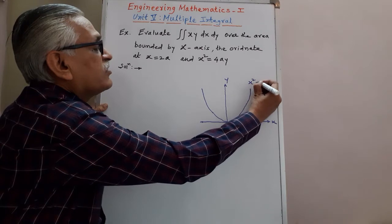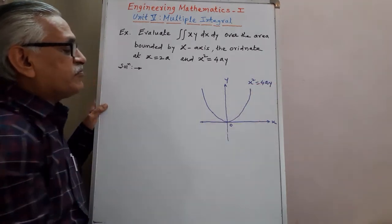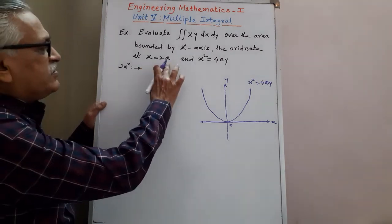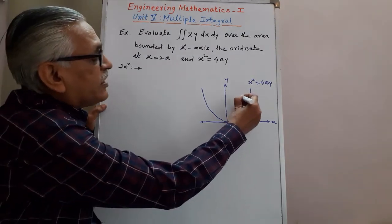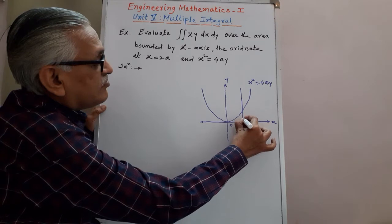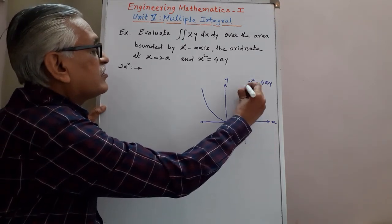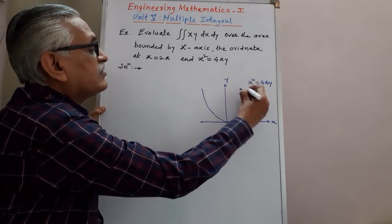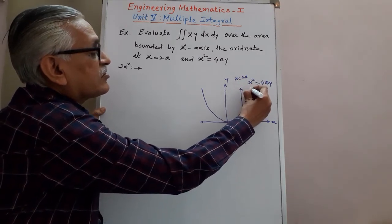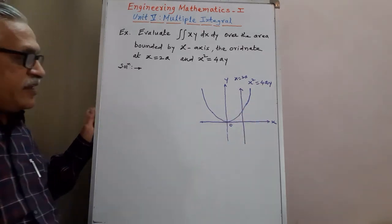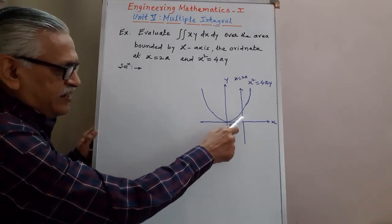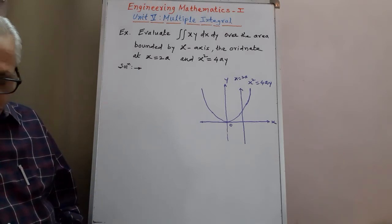The curve is x squared equals 4ay. Then the line x equals 2a is a line parallel to the y-axis at distance 2a. We draw the line x equals 2a, and show the area bounded by the parabola, the line, and the x-axis.